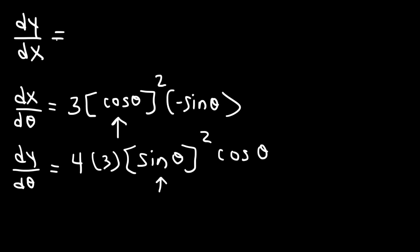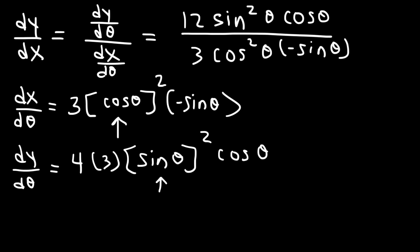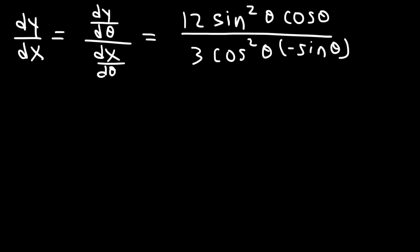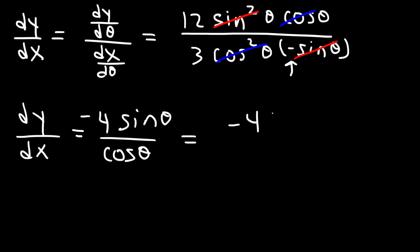Now let's use the formula to determine dy/dx: dy/dθ divided by dx/dθ. So dy/dθ is 12 sine squared theta cosine theta, and dx/dθ is 3 cosine squared theta times negative sine theta. Dividing: 12 divided by 3 is 4. Sine squared divided by sine gives sine theta on top, and cosine divided by cosine squared leaves one cosine on the bottom. So sine over cosine is tangent, giving us negative 4 tangent theta as dy/dx.